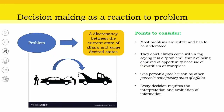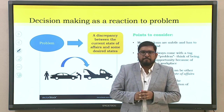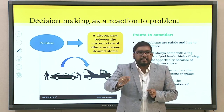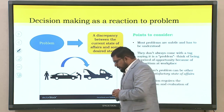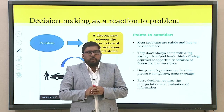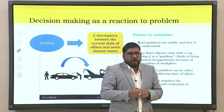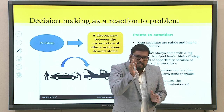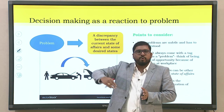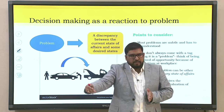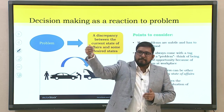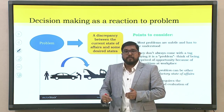Now let us look into decision making as a reaction to a problem. What is a problem? Many times we misconstrue the word. A problem literally means a discrepancy between the current state of affairs and some desired state. For example, your problem could be that you are feeling hot or sweaty and not comfortable — there is a discrepancy between the current state and the desired state of being in a cool, air-conditioned environment. So that is a discrepancy.